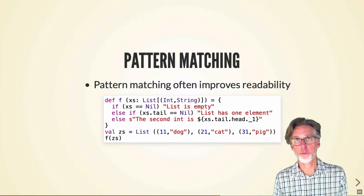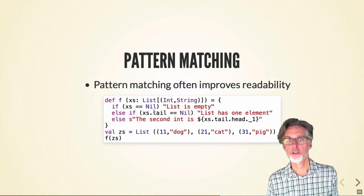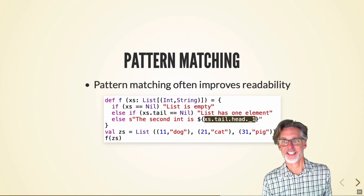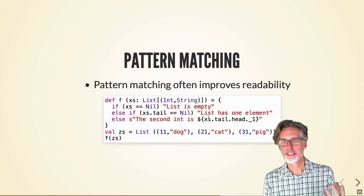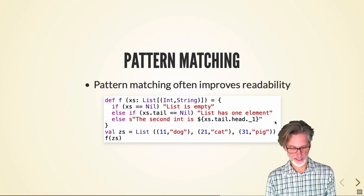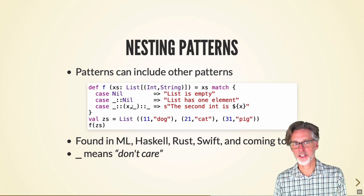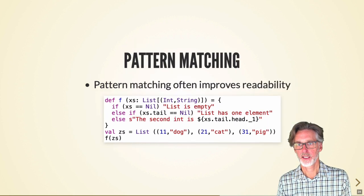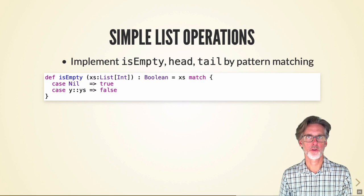Pattern matching may take a little time to get used to, but it really does improve readability. Here's the same code written with accessors instead of pattern matching. The accessor version requires something like xs.tail.head._1 — the kind of nested access that is error-prone and hard to read, whereas the pattern matching version is much easier to understand.